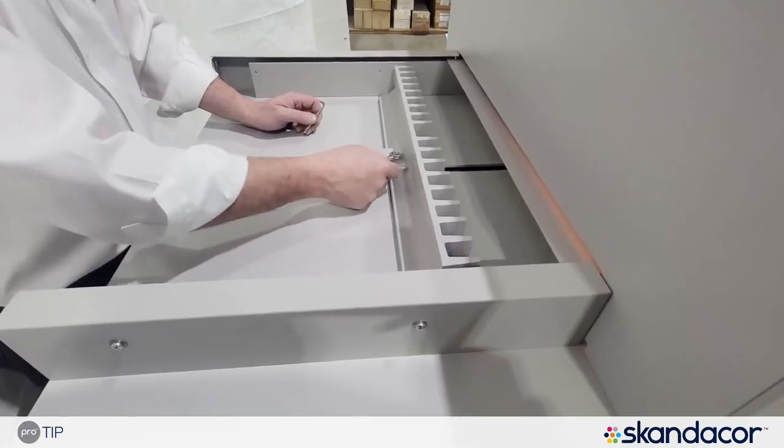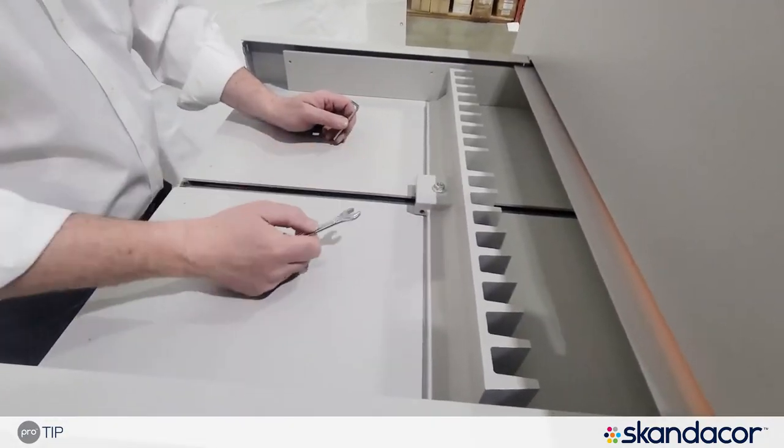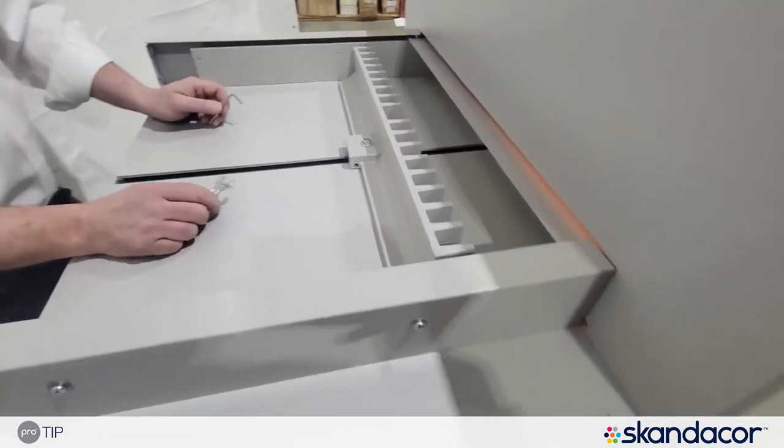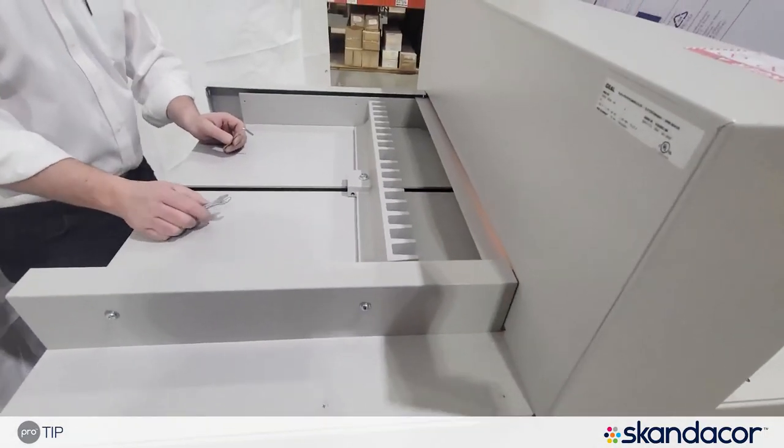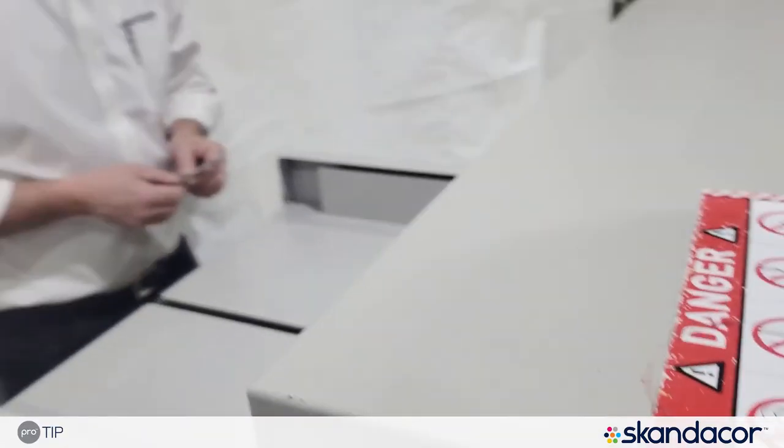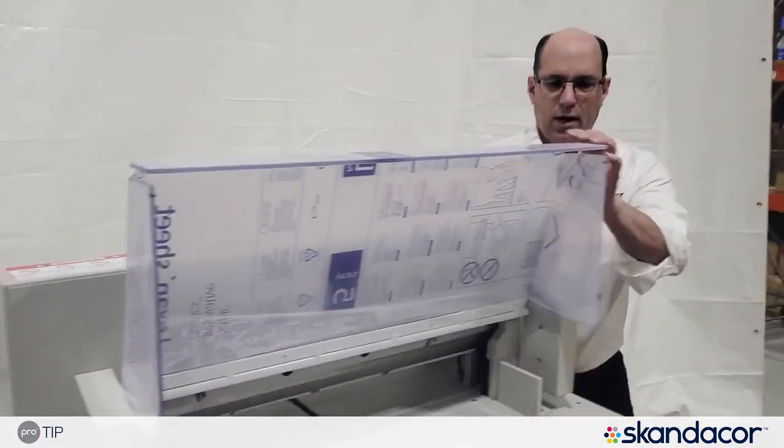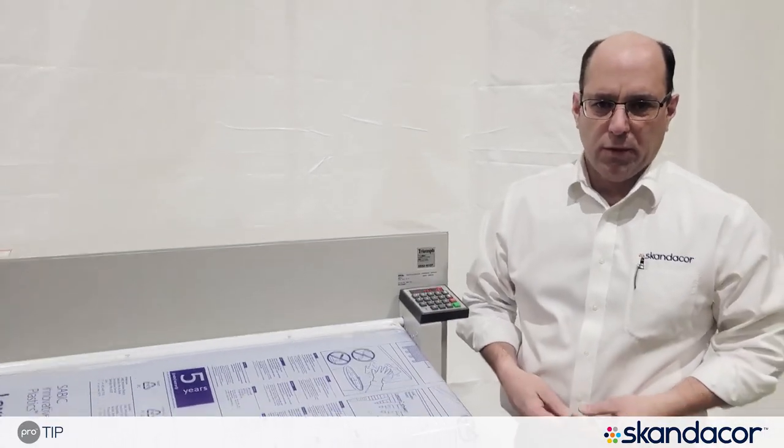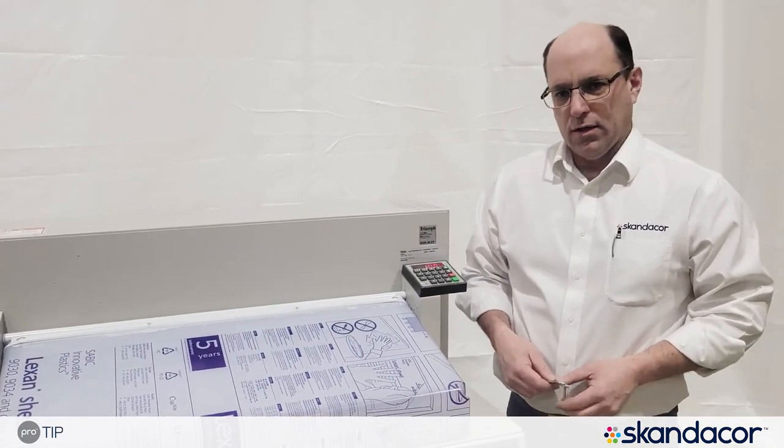Then remember to completely tighten up this center hold down bolt. And that is how you can check and adjust if necessary the way that the back gauge alignment is in relation to the blade on a guillotine cutter.